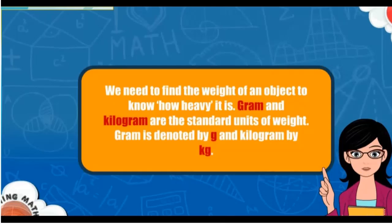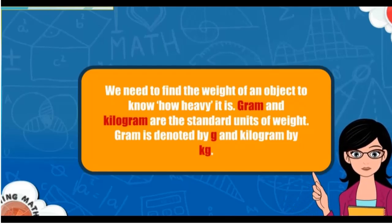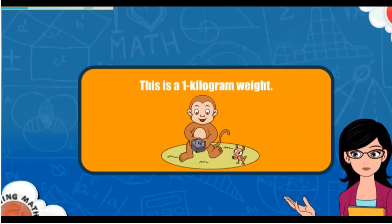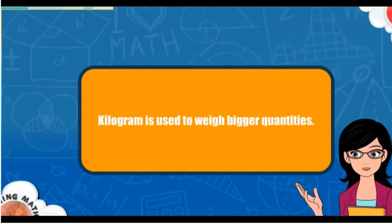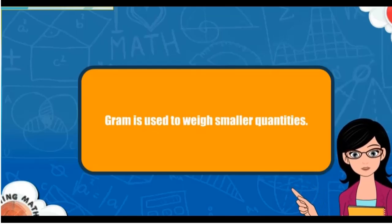We need to find the weight of an object to know how heavy it is. Gram and kilogram are the standard units of weight. Gram is denoted by g and kilogram by kg. 1 kilogram (kg) is equal to 1000 grams (g). Kilogram is used to weigh bigger quantities, and gram is used to weigh smaller quantities.